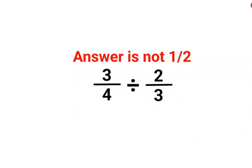Welcome everyone. Today we are going to understand why the answer for this question is not 1/2 or half. The reason is that a lot of people thought that when you have division, you can directly cancel the numerators and the denominators. Therefore, 2s cancel, 3s cancel, and you get the answer as 1/2.